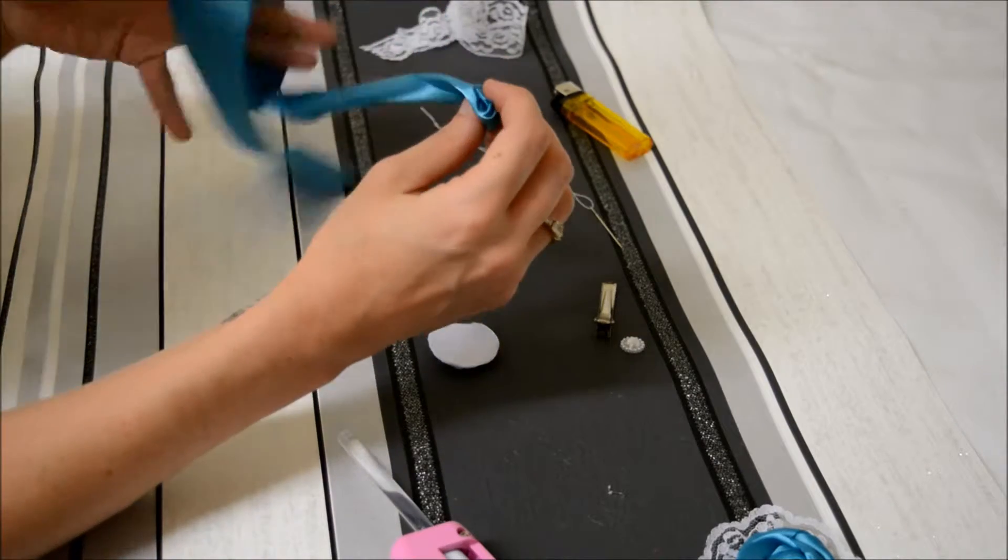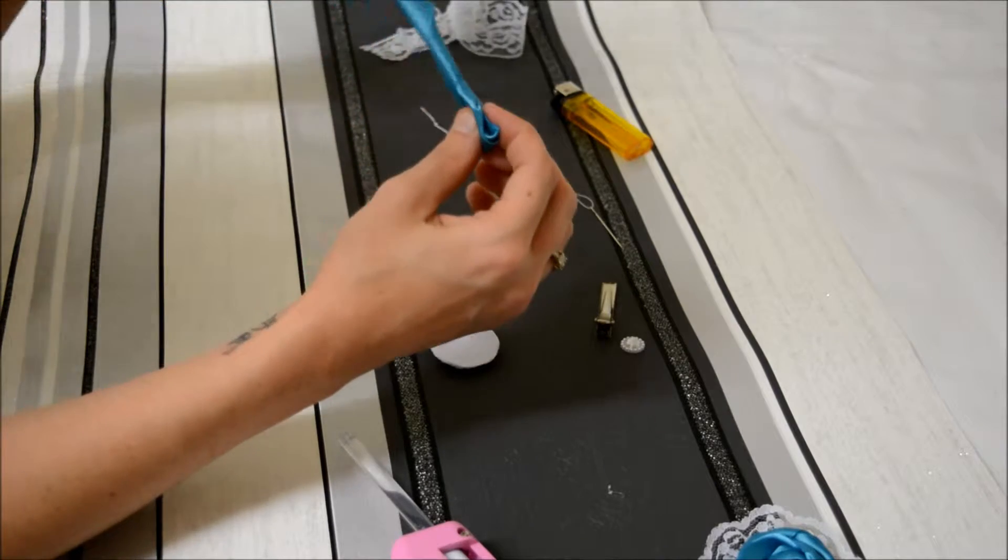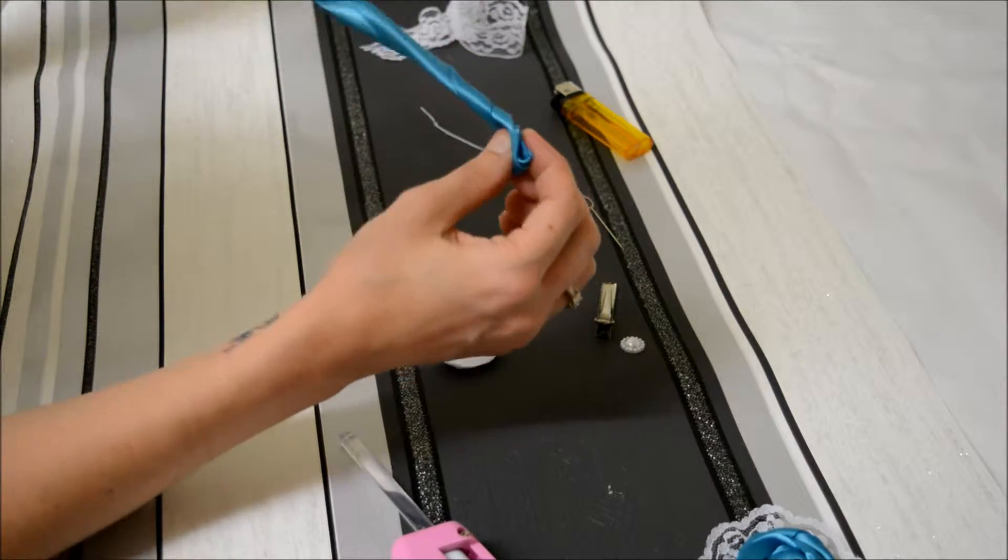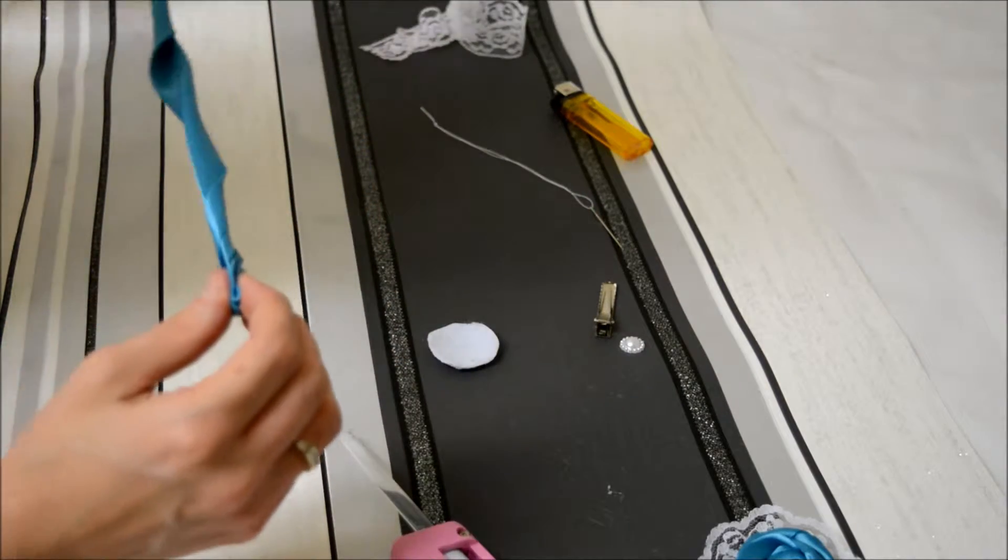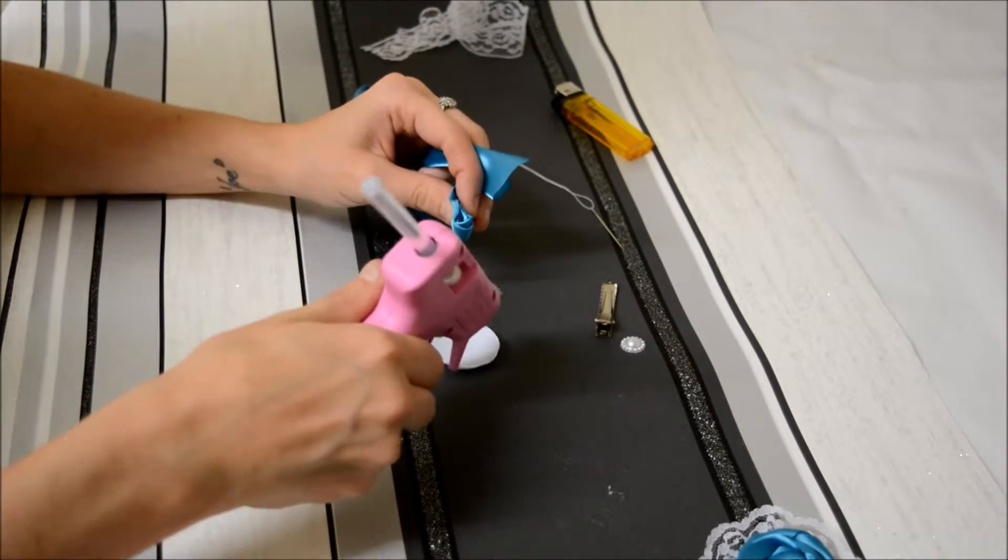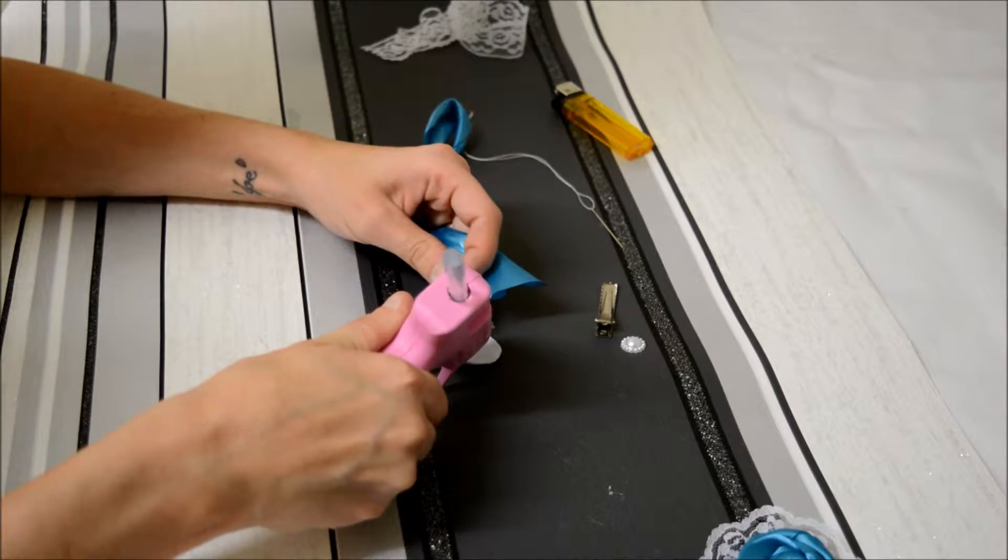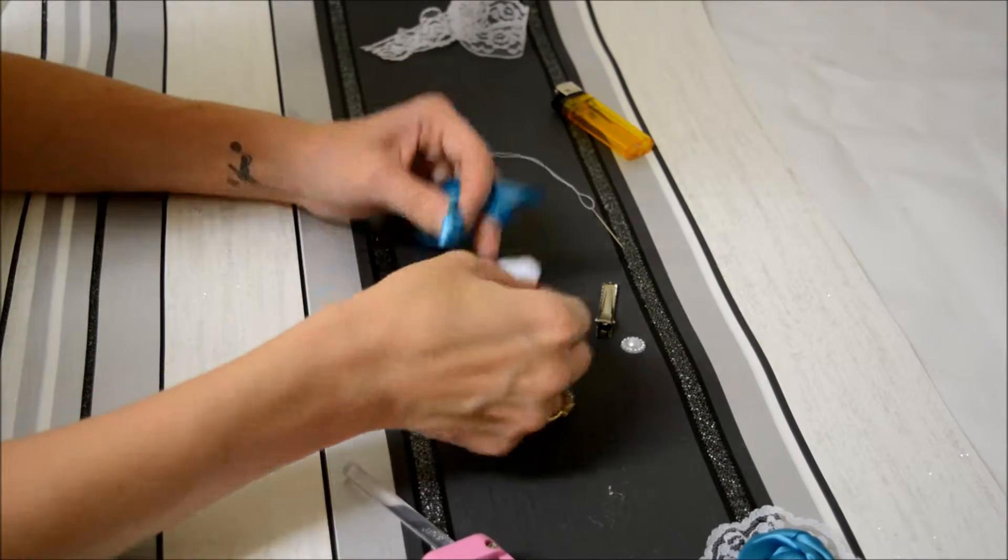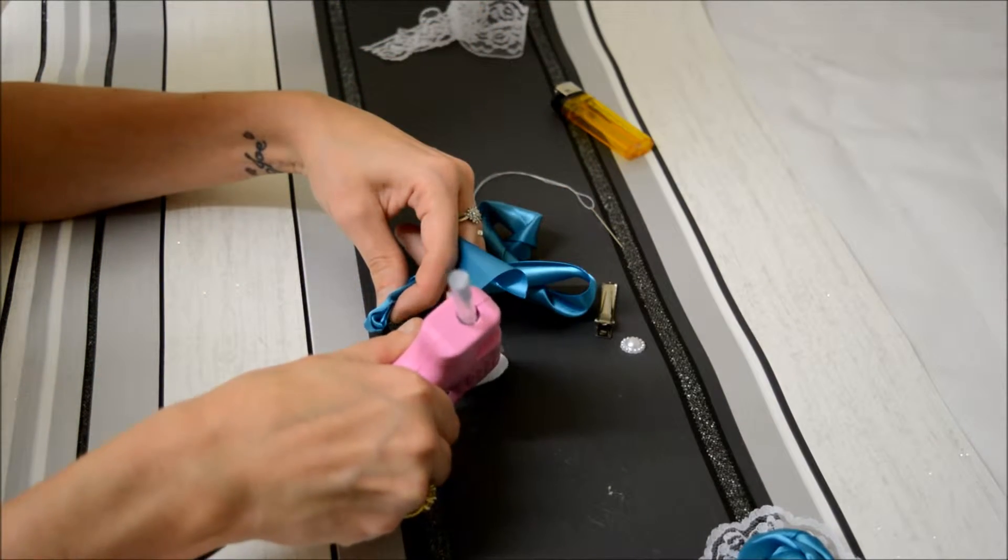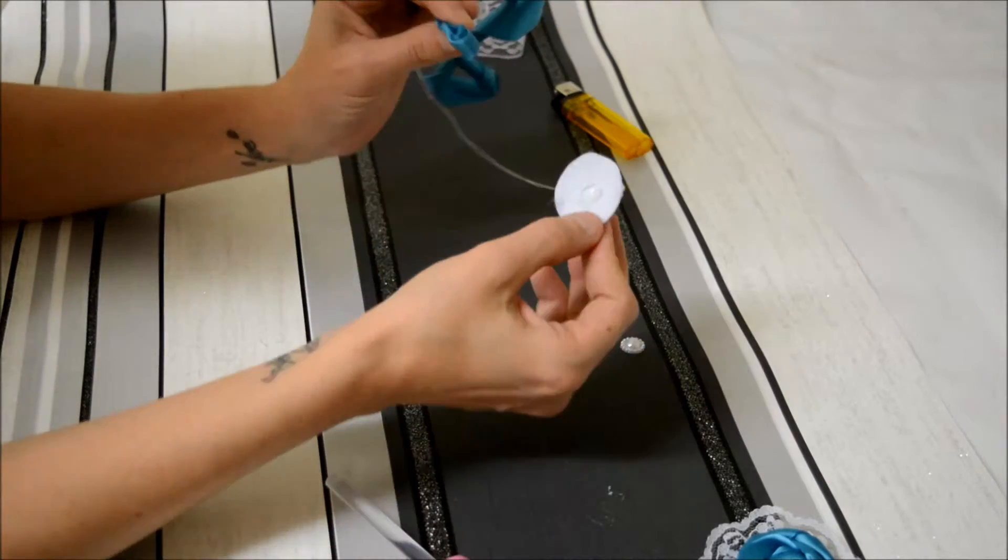Now I'm going to take the rest of this ribbon and twist it round. Keep that twisted. Now I'm going to apply glue to the centre of my felt circle and push down this first bit. Apply a bit more glue. The first bit that we made, I'm just going to push that down.